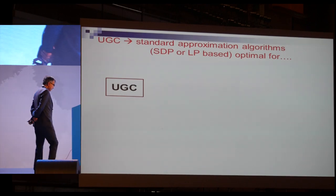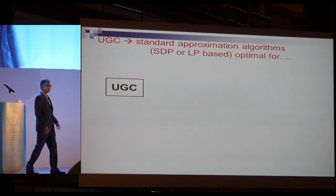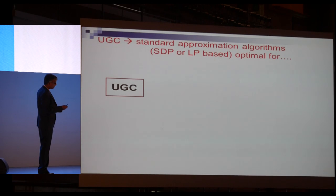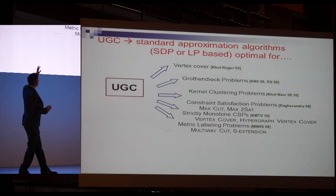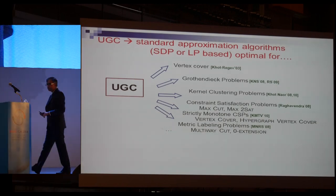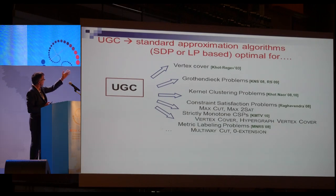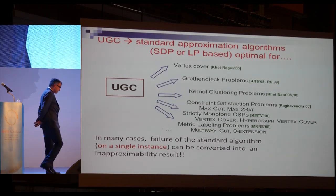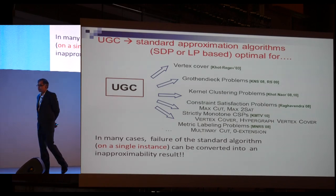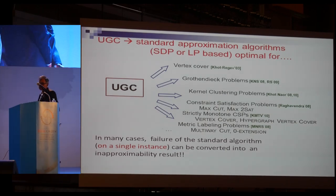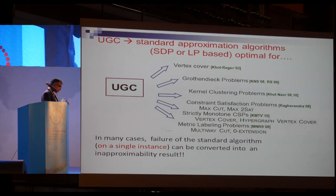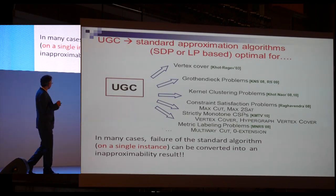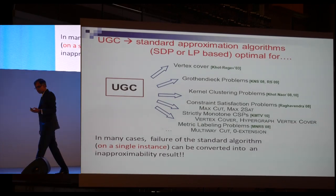The unique games conjecture implies that the standard approximation algorithms — geometric algorithms based on linear programming or semi-definite programming — are optimal for a variety of problems. And not only does it imply that, but in a very surprising way: the failure of the standard approximation algorithm on some instance is used or converted into an inapproximability result.